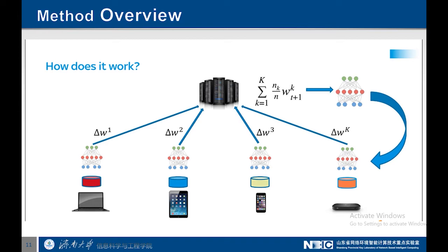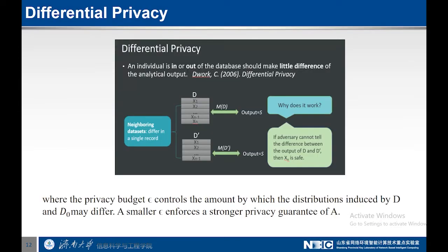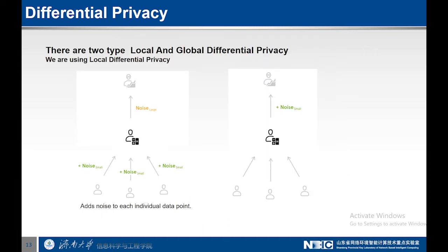To make it more secure, privacy preserving techniques have been discovered and used by different researchers. Currently, we are using differential privacy, which is one of the best state-of-the-art privacy preserving techniques to secure data. It is controlled by the parameter epsilon — a smaller epsilon enforces a stronger privacy guarantee. In differential privacy there are two types: local and global.